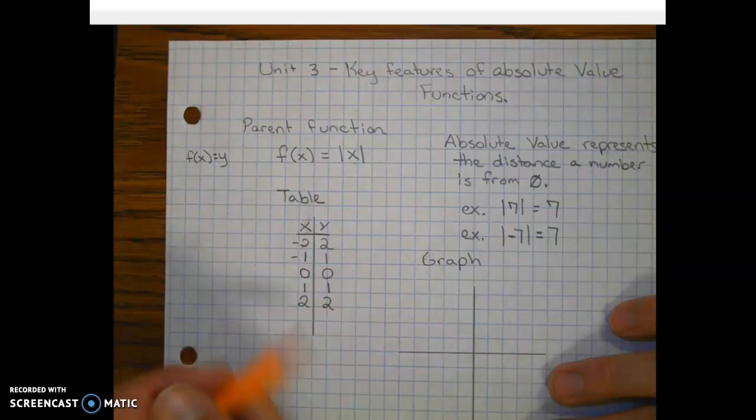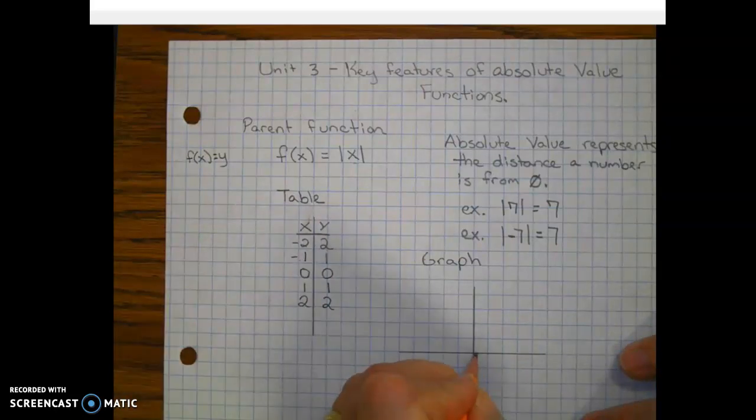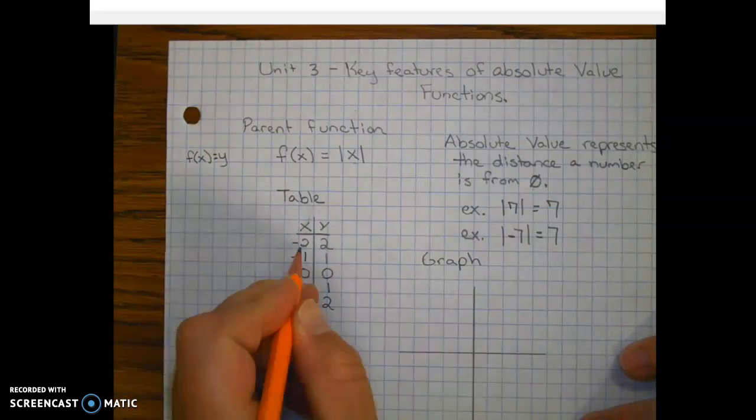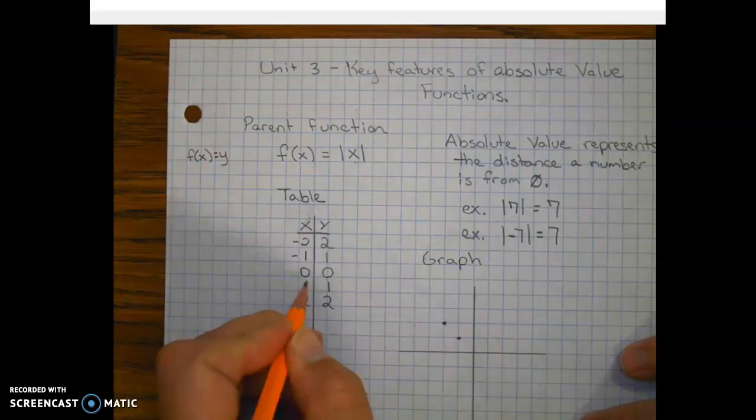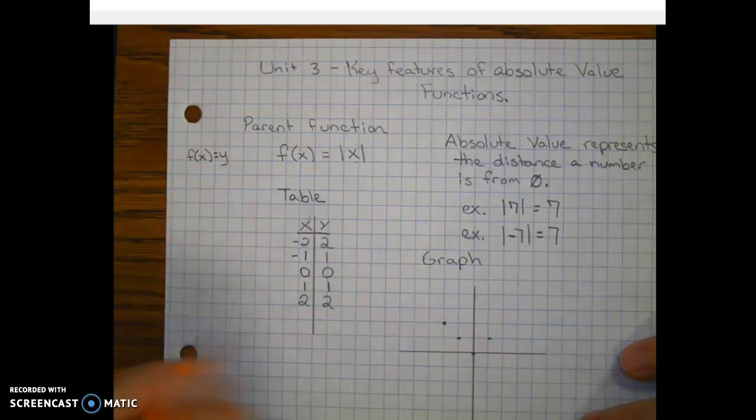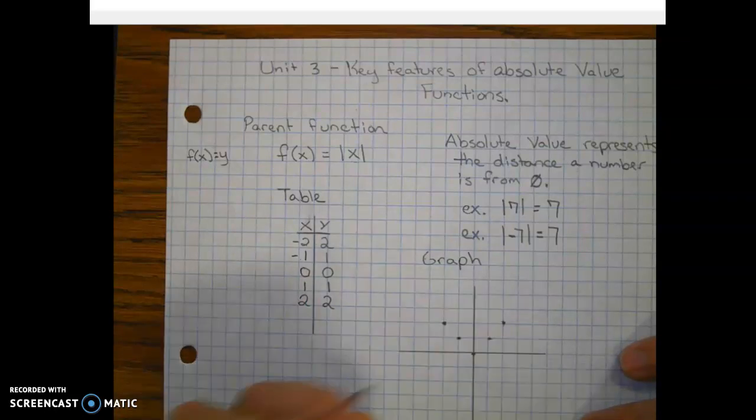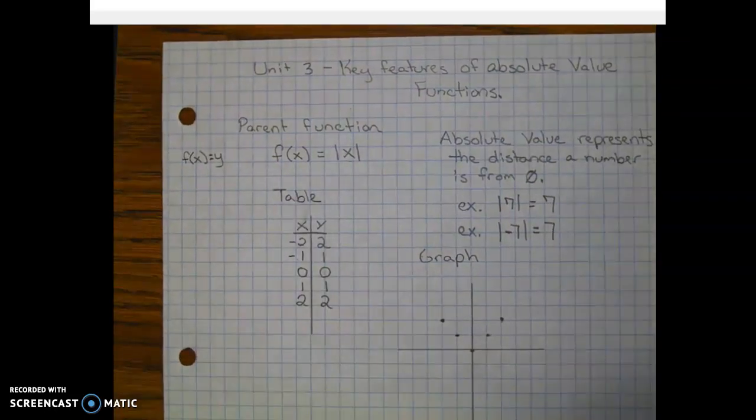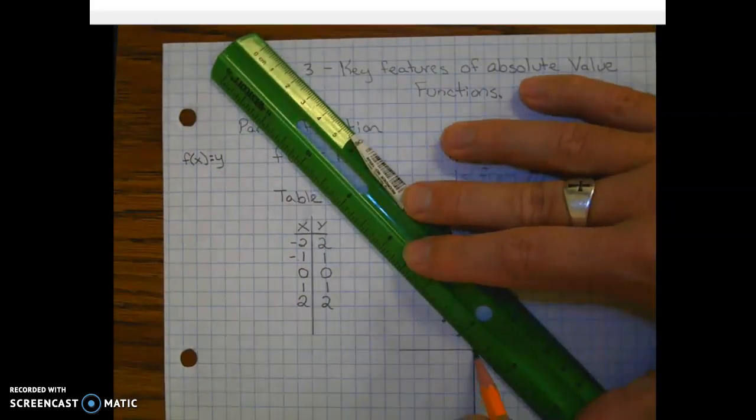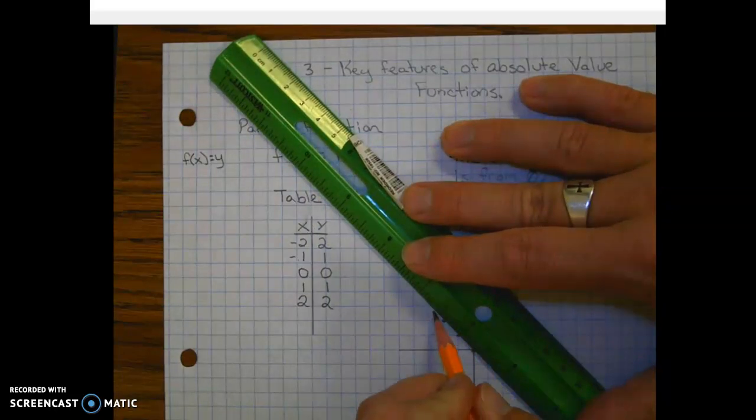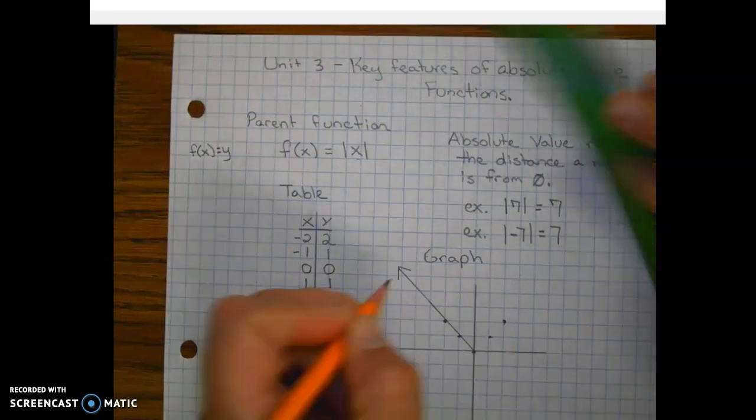Now to get the graph from our table, we're going to go ahead and plot these points. So we go on the x to negative two and up positive two. Negative one, one, zero, zero, one, one, two, two. Then we find ourselves a straight edge and we see